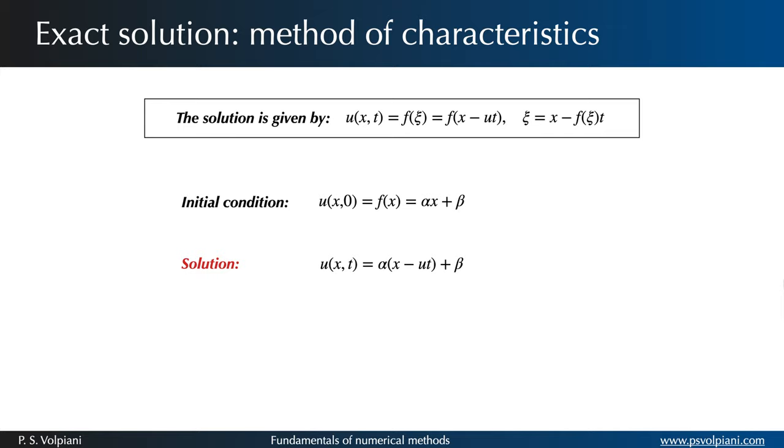Thus, the solution of this problem becomes alpha times x minus u times t plus beta. This can be solved explicitly to obtain the following solution.